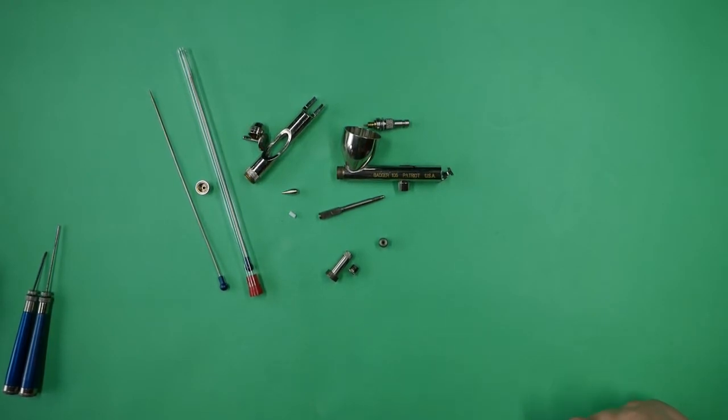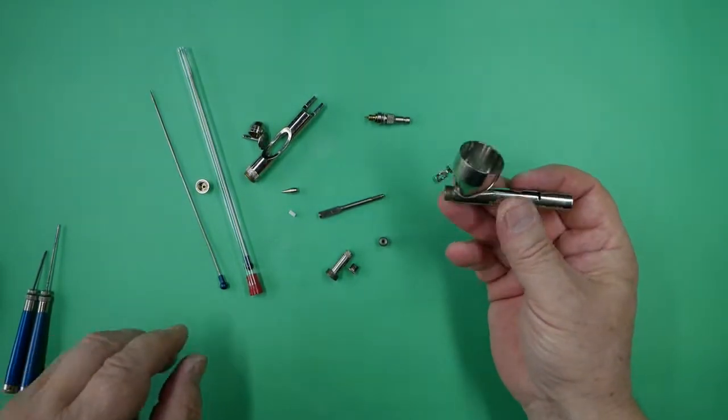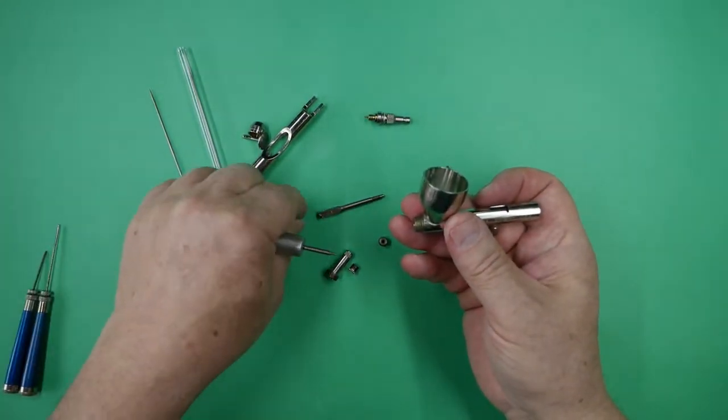So we will be replacing that, lubricating all the parts up as we fit them, and we believe then that the airbrush will be working. And the first thing we will do is replace the needle bearing.